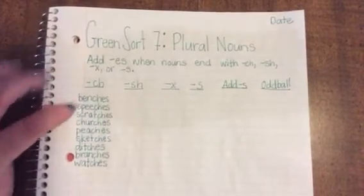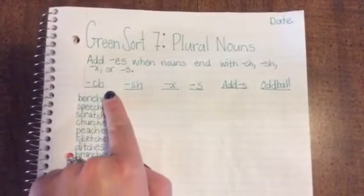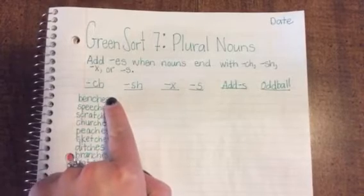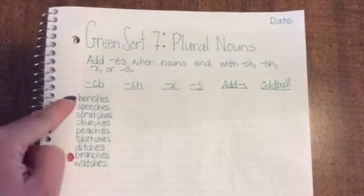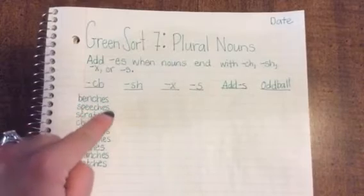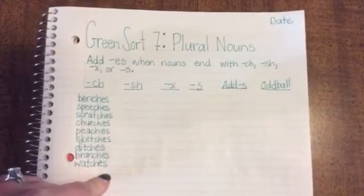So again, all of these singular nouns end with CH: bench, speech, scratch, church. And then to make it plural or more than one, we simply add the ES to the end.